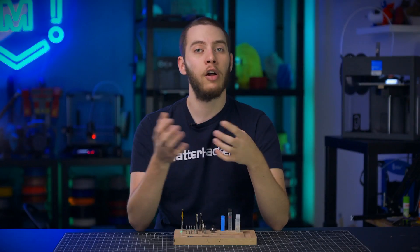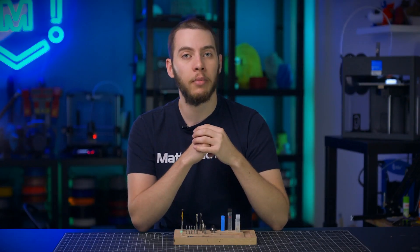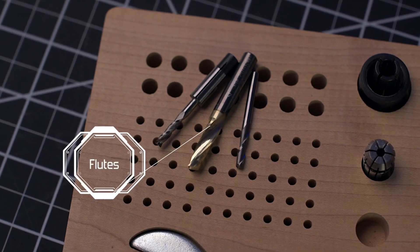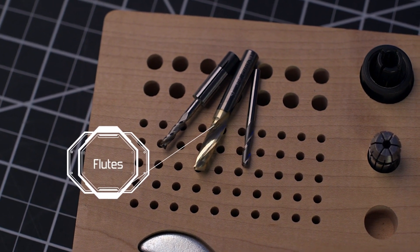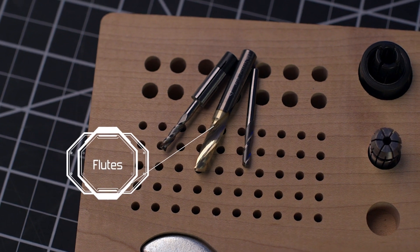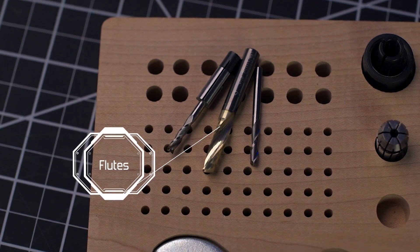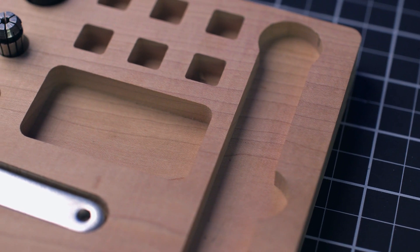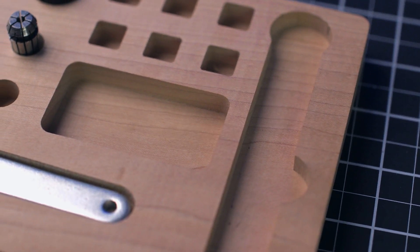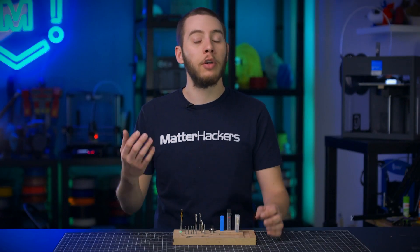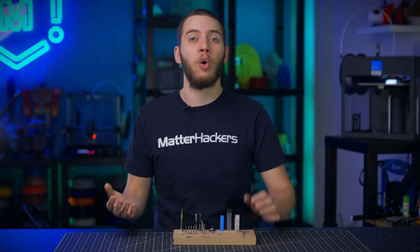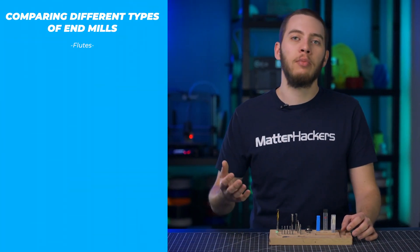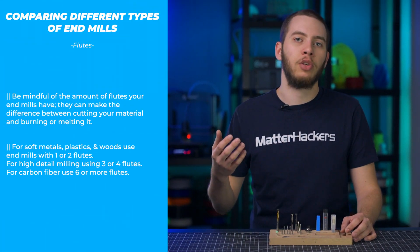The tip profile isn't the only thing that differentiates end mills. The spiral channels on an end mill, called flutes, determine which materials you can cut. Generally, fewer flutes equals better chip clearing at the expense of surface finish, while more flutes gives you a nicer surface finish but worse chip clearing. The softer and gummier the material, the quicker you need to remove chips away from your part. Using a six-flute end mill on plastic is going to melt it more than it's going to actually cut it.